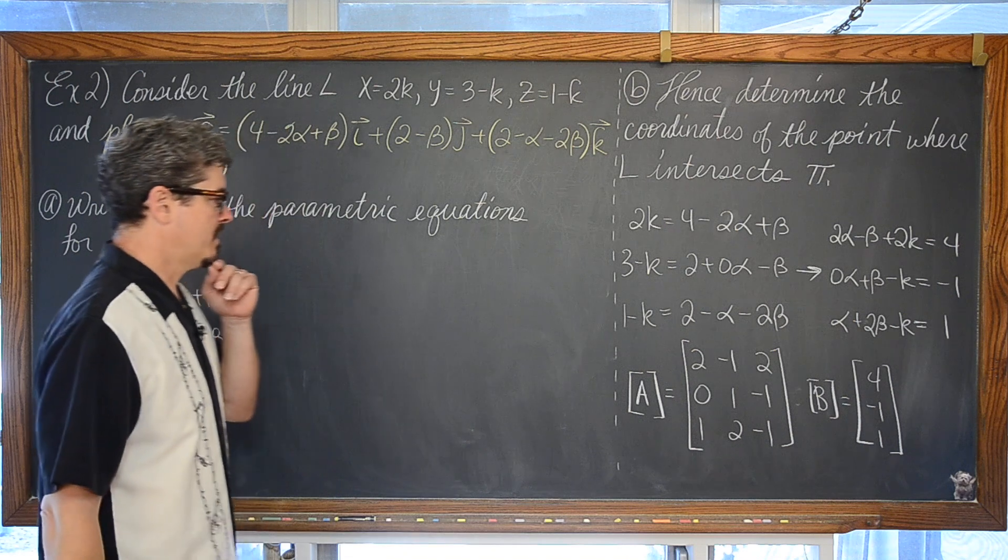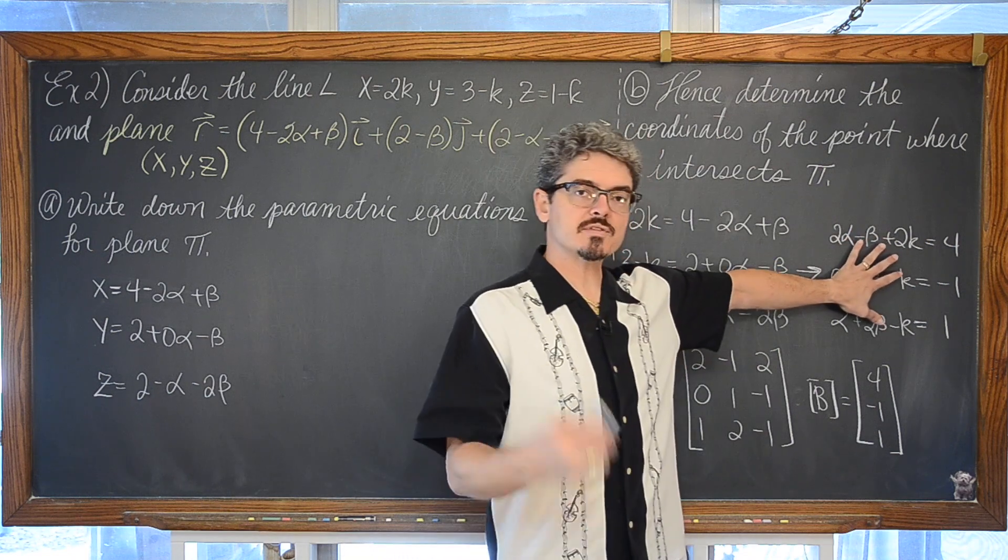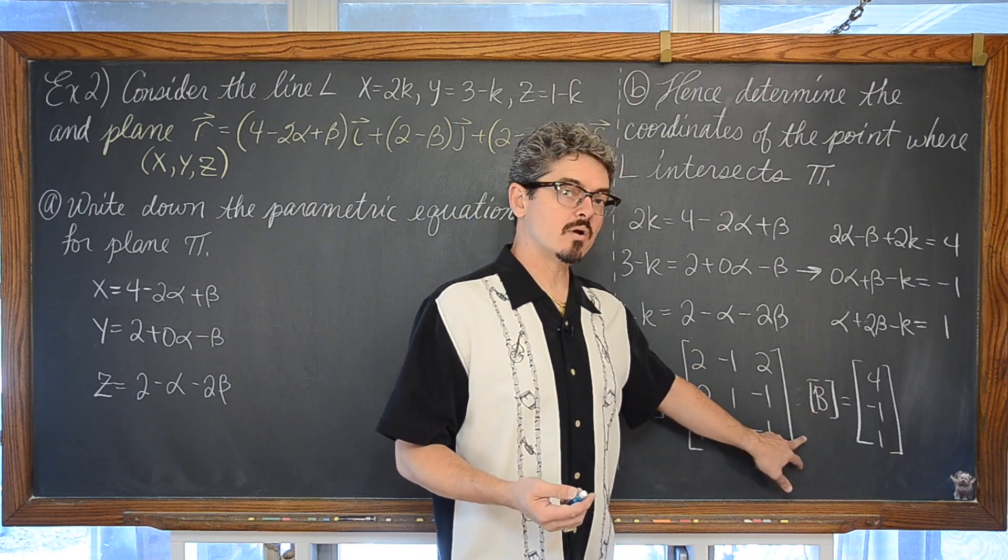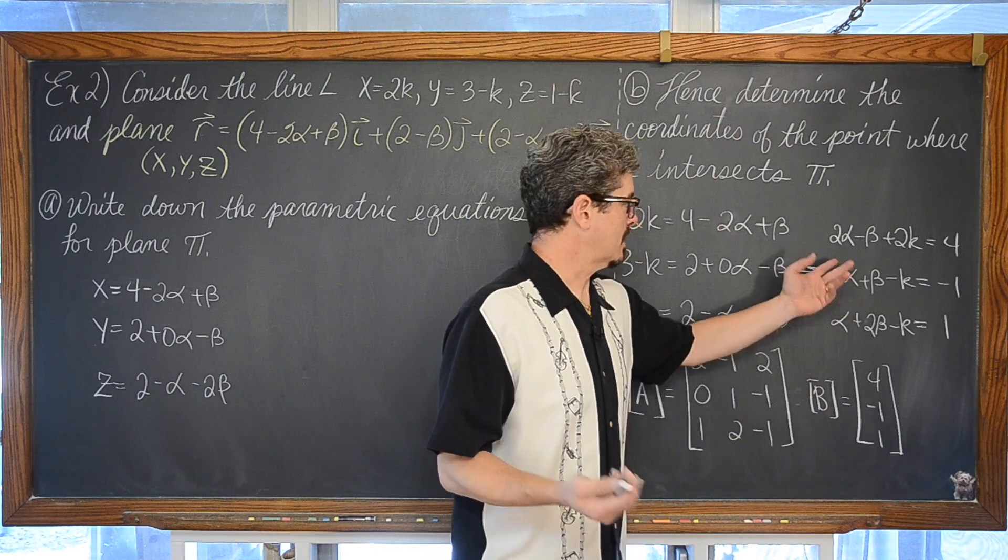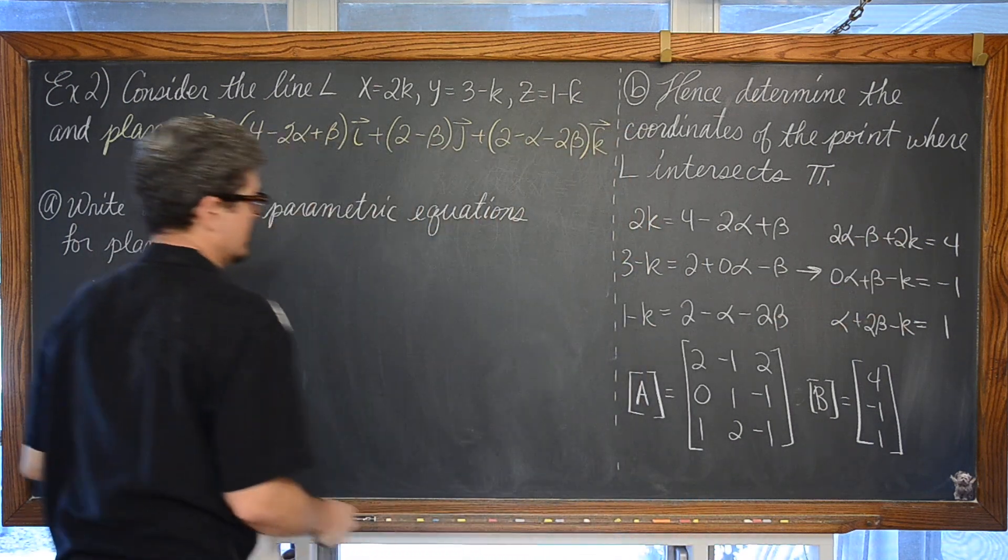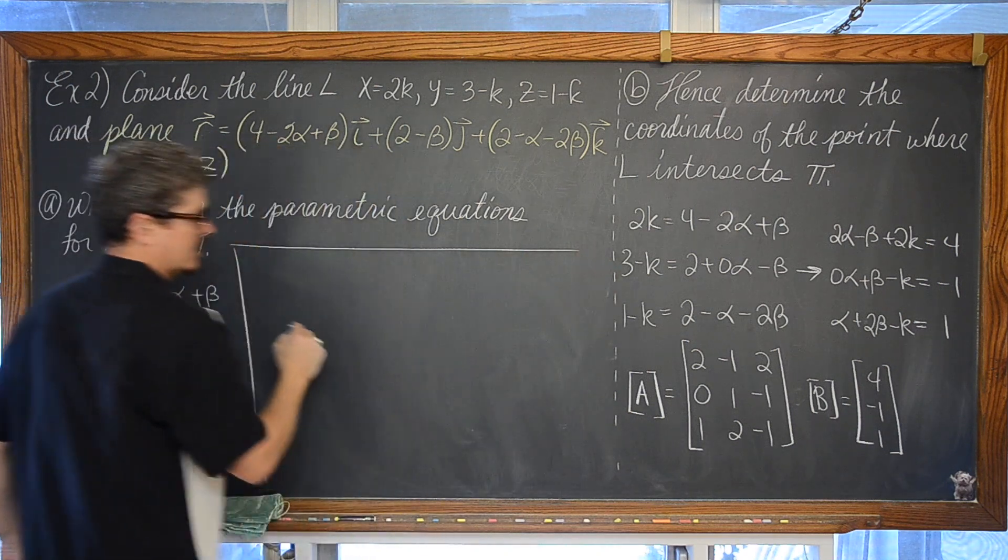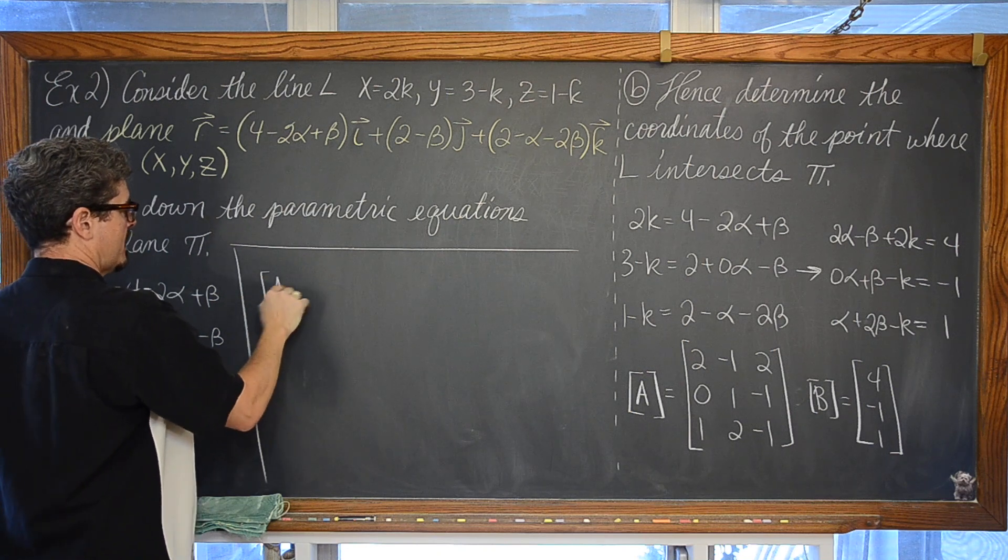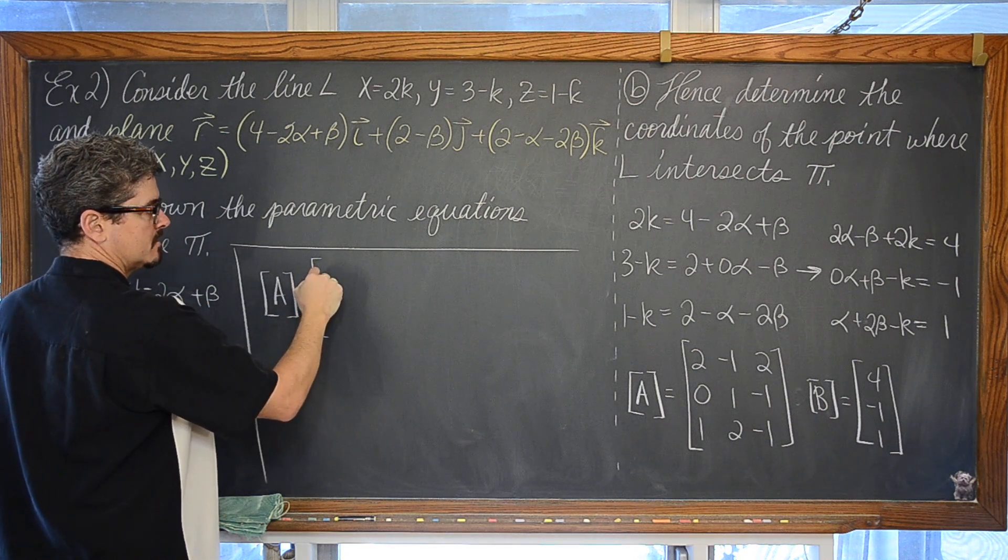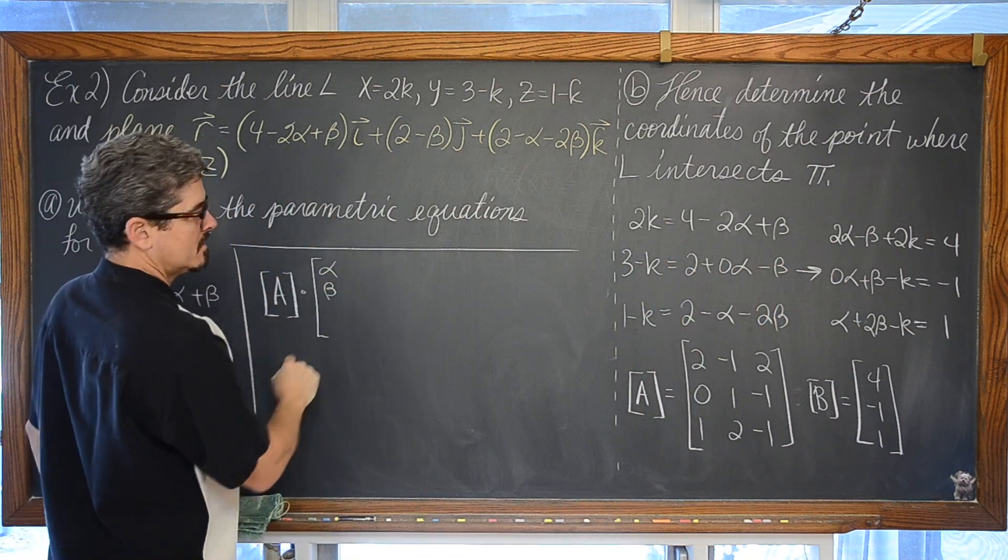Now, what we have here is that I can write this left side of the 3x3 system as this matrix times basically another 3x1 matrix of x, y, or I was going to say x, y, and z, but alpha, beta, and k. And that would look like this. So, matrix A times a 3x1 matrix of, the first variable was alpha, then beta, then k.